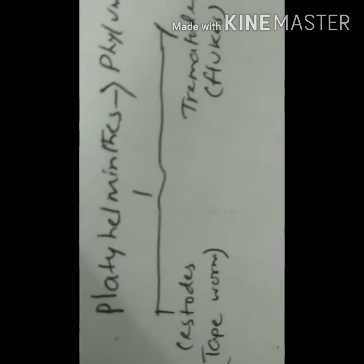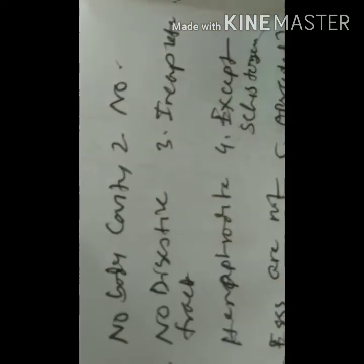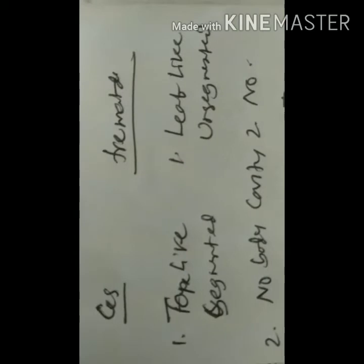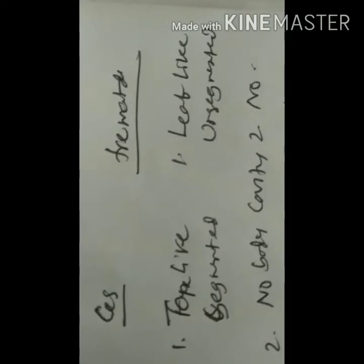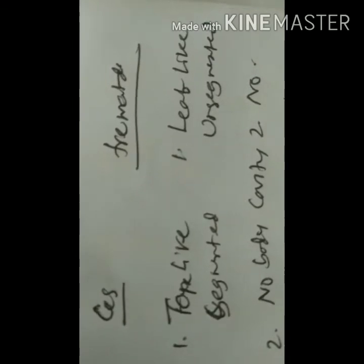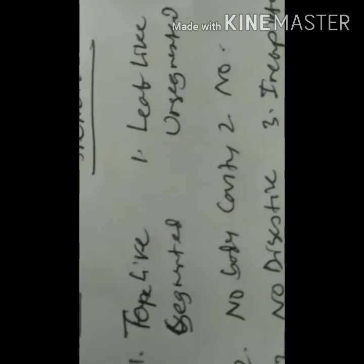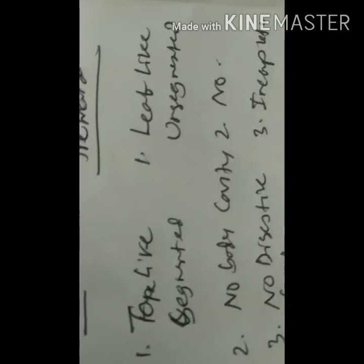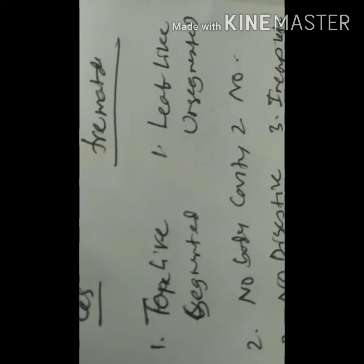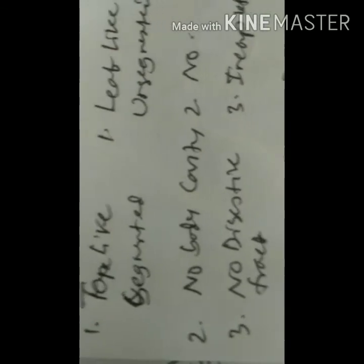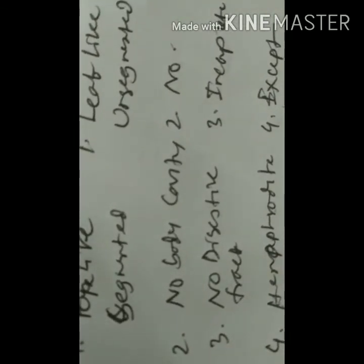Let us see the differences between Cestoda and Trematoda. First, Cestodes have a tape-like or segmented body, while the Trematode body is leaf-like or non-segmented. Both classes have no body cavity — their internal viscera float inside a jelly-like liquid. In Cestodes there is no digestive tract, whereas in Trematodes there is a digestive tract but it is incomplete, with the absence of an anus.